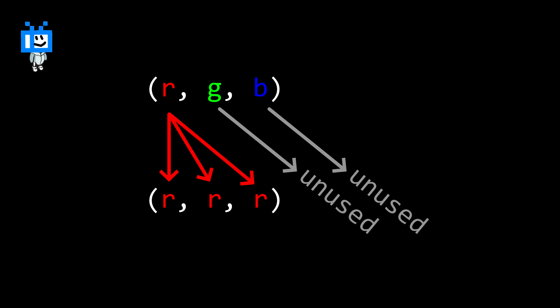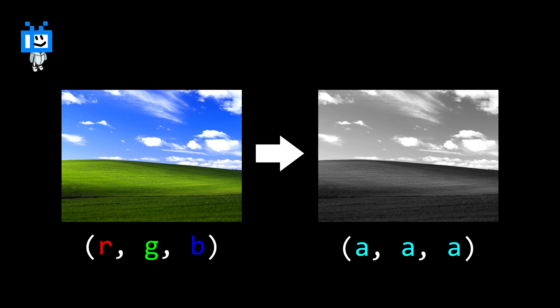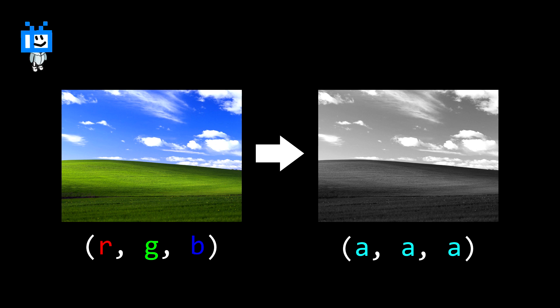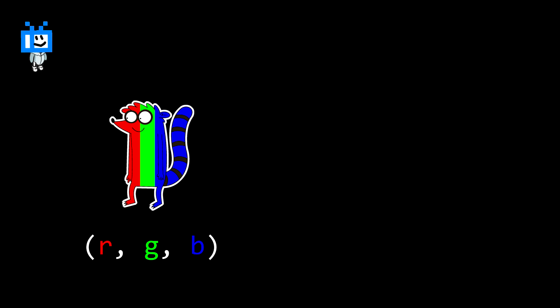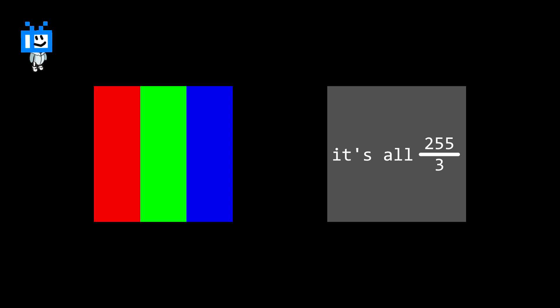My second attempt, after noticing my mistake of not taking all the colors into account, was to get the average: red plus green plus blue divided by three. Well, that looks better, right? But again, the normal picture looks fine while Rigby exposes the problem. There's no contrast between the colors, which mathematically makes sense, but it still doesn't look right.